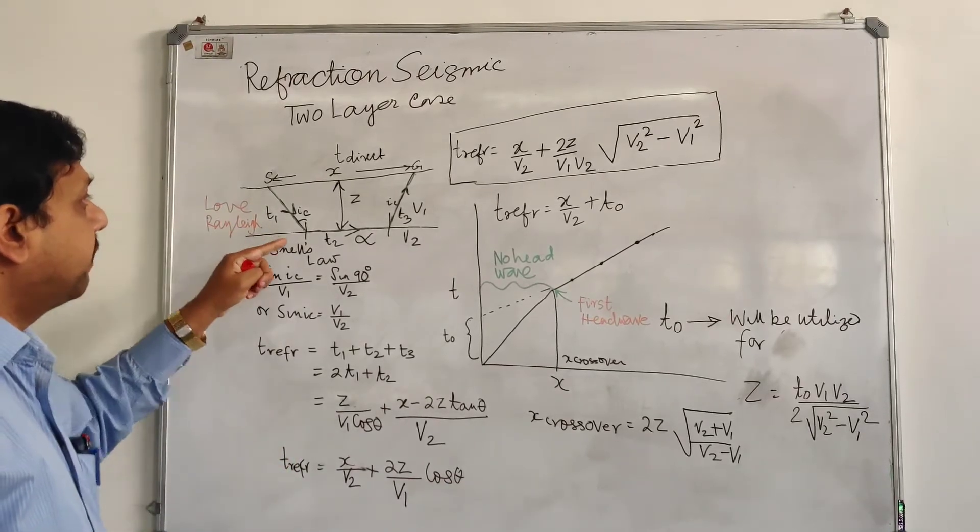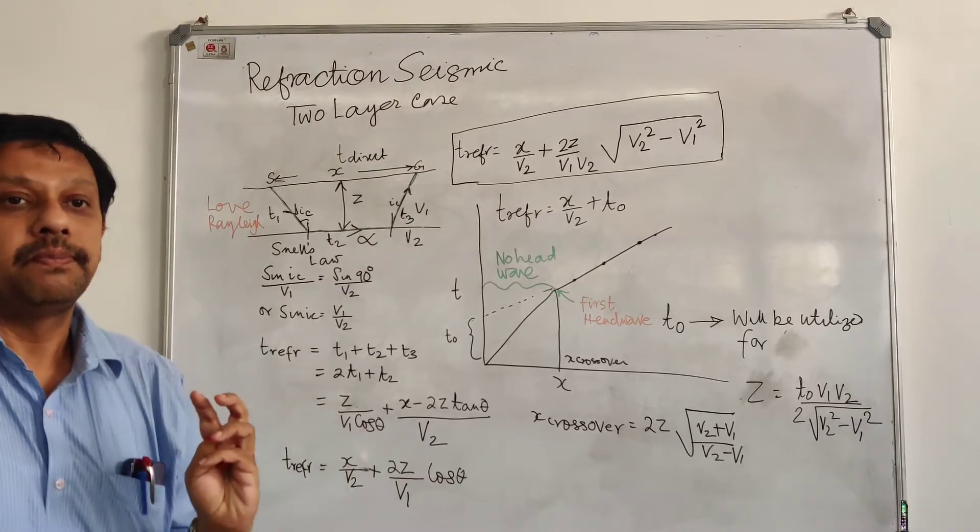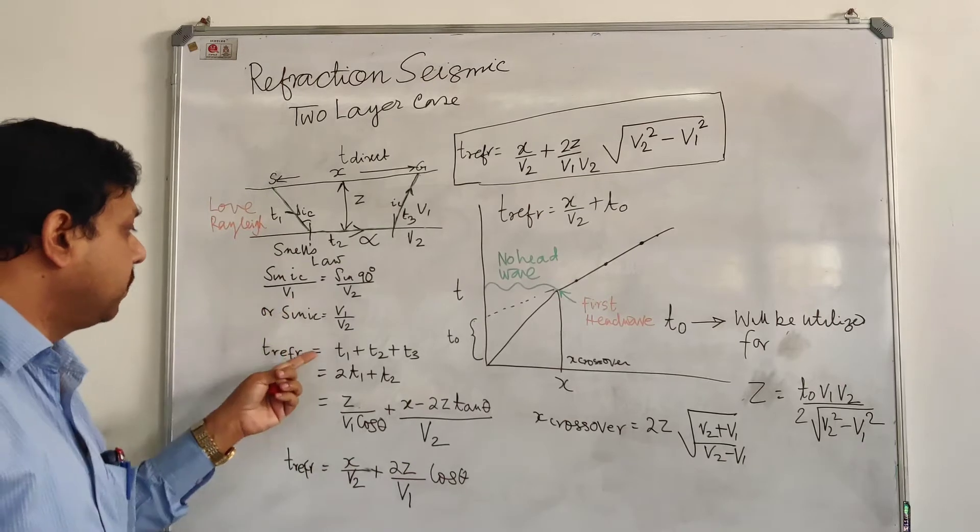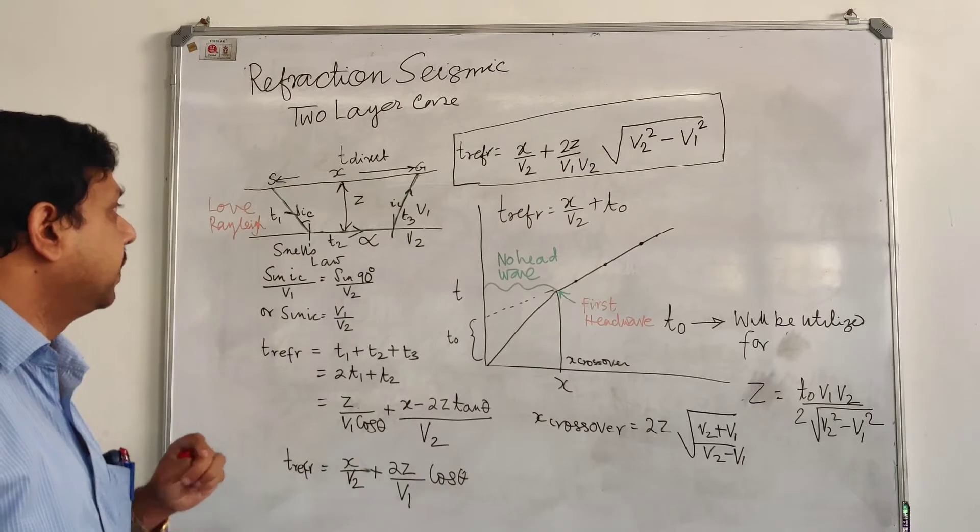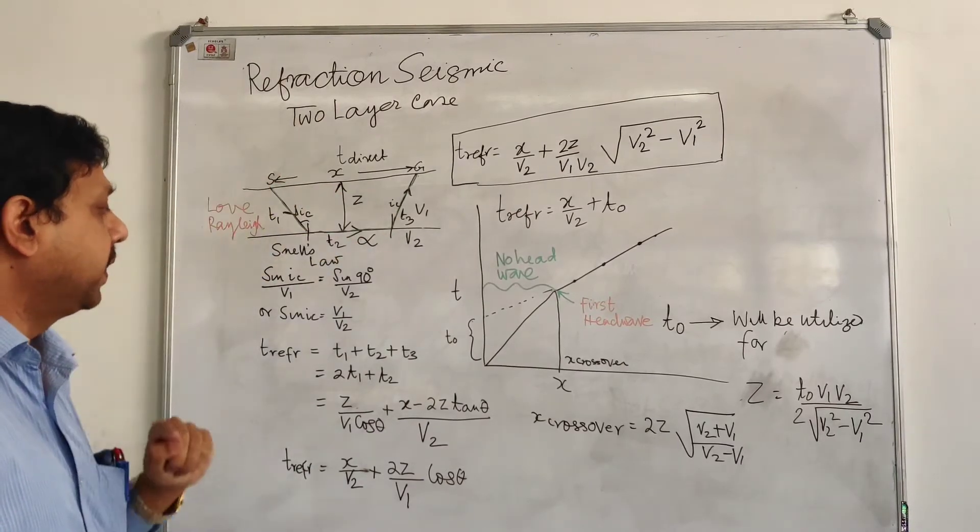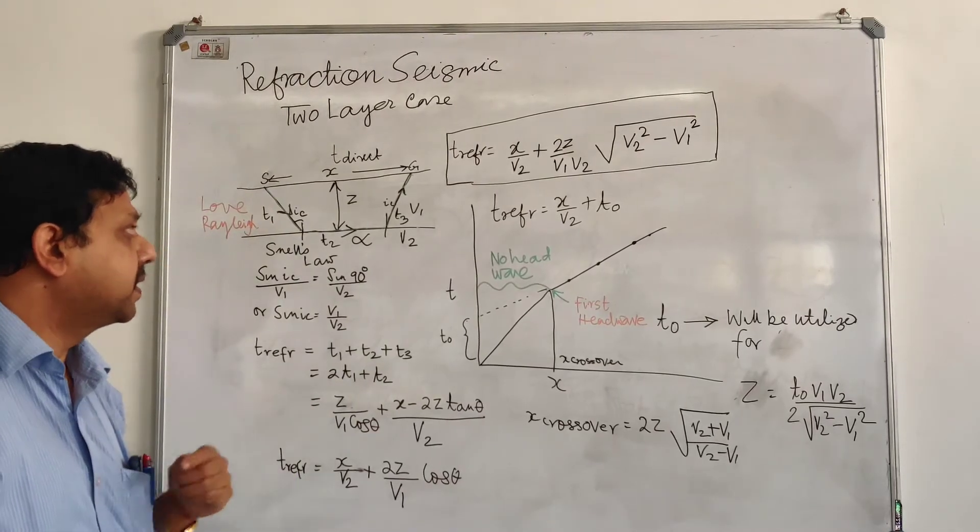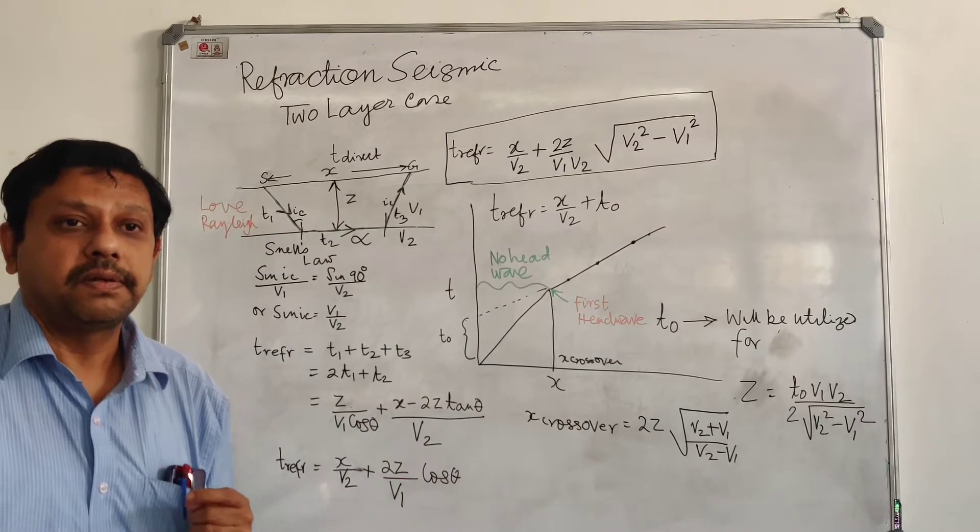Once there is a refraction happening, we have three times which add up to the refraction time. One is T1, the second is T2, and the third is T3. But we can see here T1 and T3 are the same, so we put it as 2T1 plus T2.